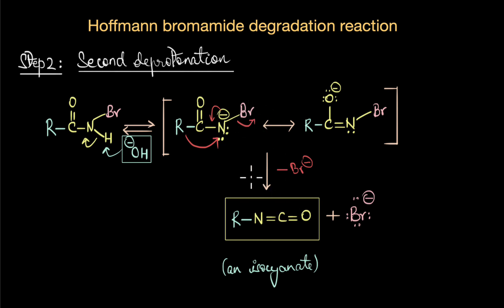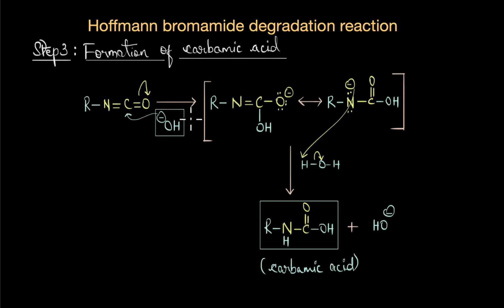Remember the reaction is being carried out in a super alkaline medium. The third step involves the attack of a hydroxide ion on the carbonyl carbon of our isocyanate, giving us a carbamic acid. The OH- attacks the carbonyl carbon, delocalization of pi electrons takes place, and finally the C double bond gets restored and nitrogen abstracts a proton from the medium.